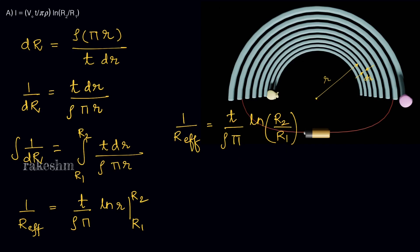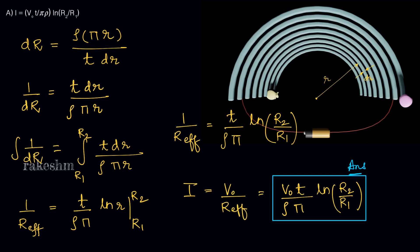So we get 1/R_effective equals t/(rho·pi) times ln(R2/R1). Therefore the current I equals V0/R_effective, which is V0·t divided by rho·pi·ln(R2/R1). The first option matches and is the correct option.